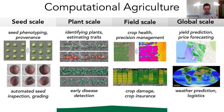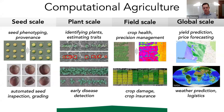If we look even higher at the global scale, we can pull in agricultural data from across the world to do things like yield prediction, price forecasting, and optimizing logistics of getting inputs where they need to be. This gives us a sense of the real breadth of the opportunity as we embrace computational agriculture.